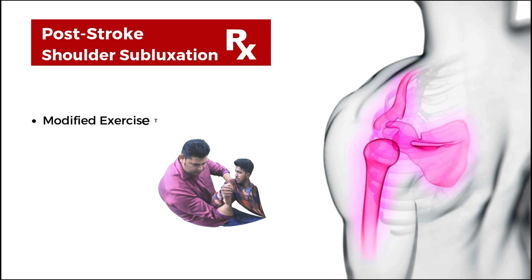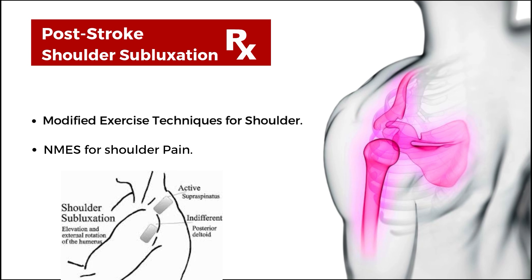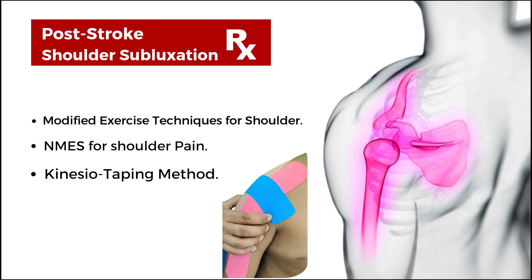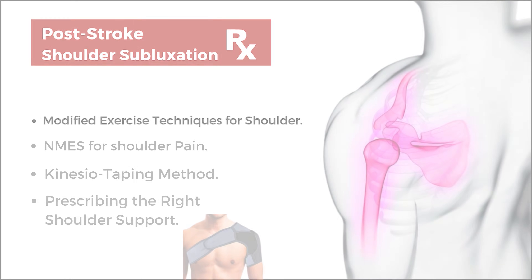Some of the evidence-based techniques to manage this condition include modified exercise techniques for the shoulder, NMES stimulation for shoulder pain, kinesio taping, and the right shoulder support for a weak shoulder. Let's see how to apply these techniques for a hemiplegic shoulder.